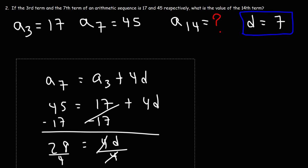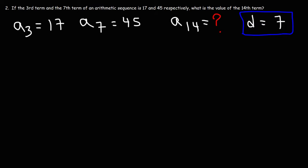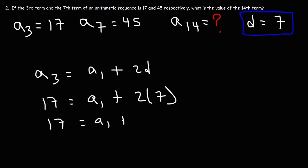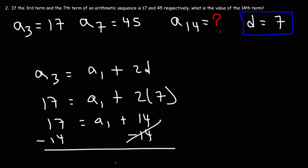Now remember, in order to find the nth term of an arithmetic sequence, we need two things: the first term and the common difference. Now that we have the common difference, we just need to calculate the first term. The 3rd term is going to be the first term plus two common differences, because 3 minus 1 is 2. The 3rd term is 17, and the common difference is 7. So 2 times 7 is 14. Subtracting 14 from both sides, we can see that the first term is 17 minus 14, or 3.